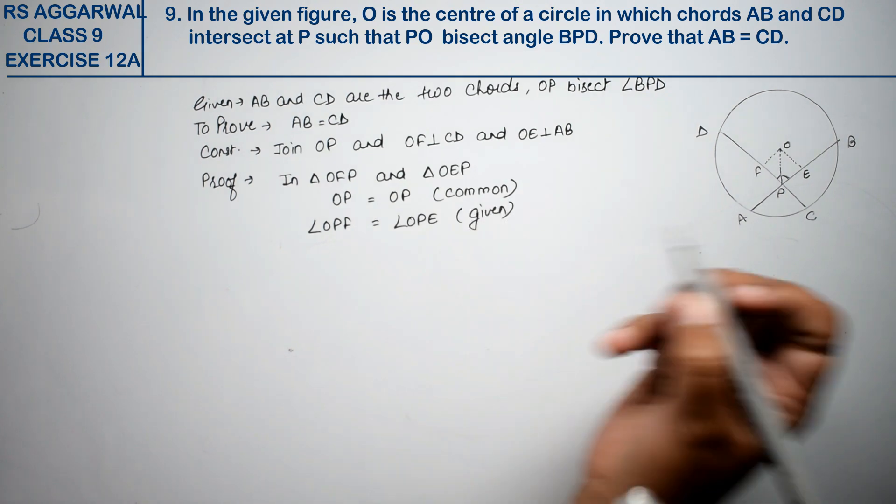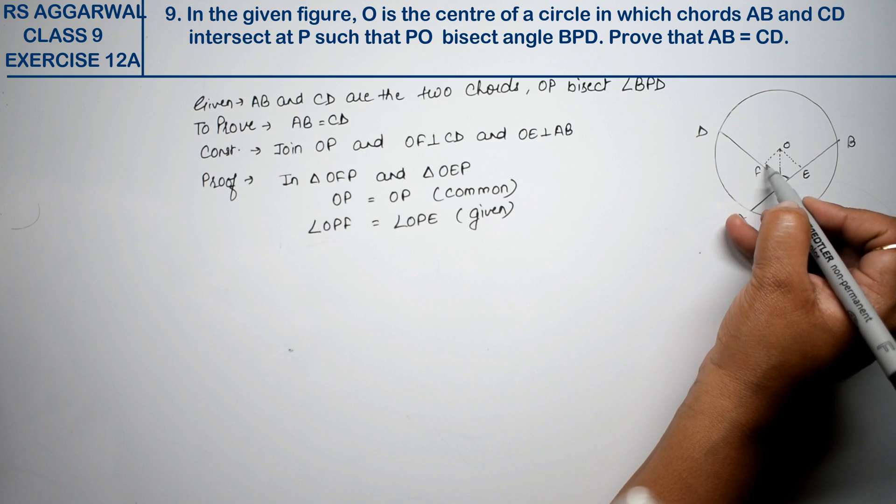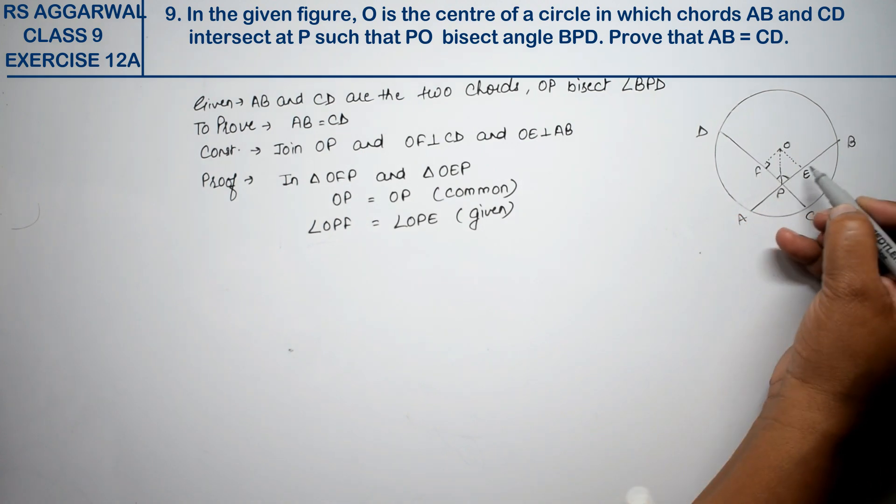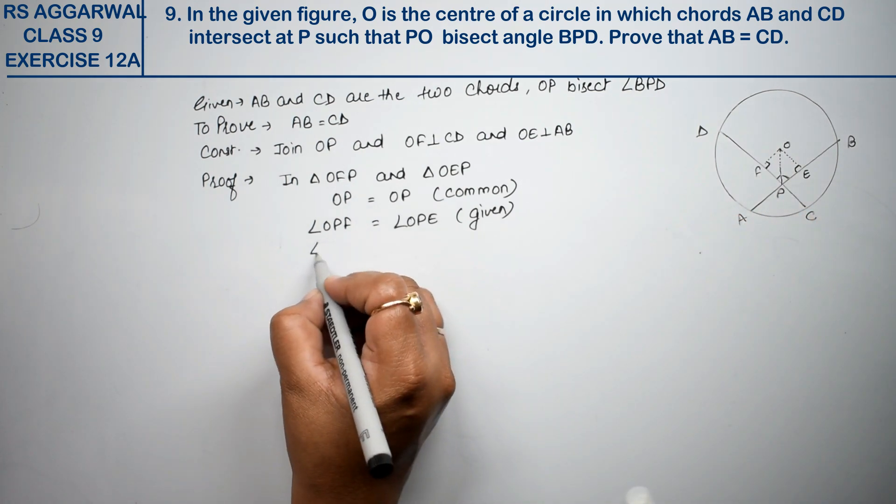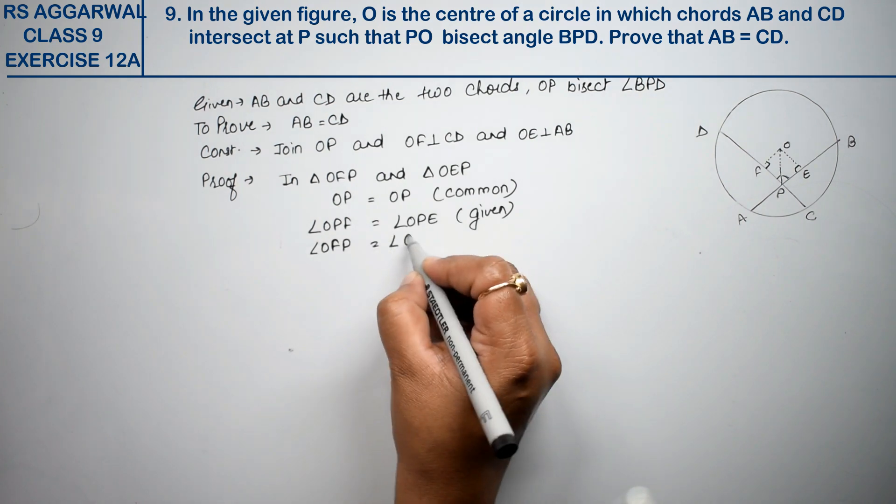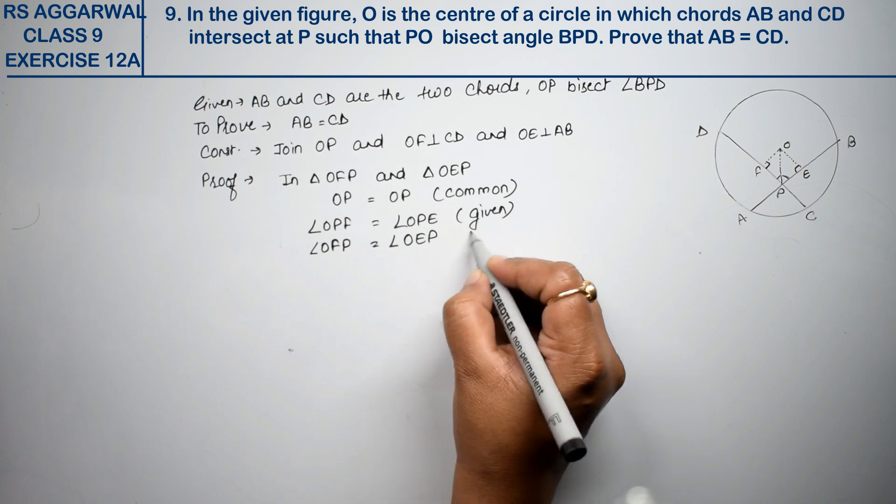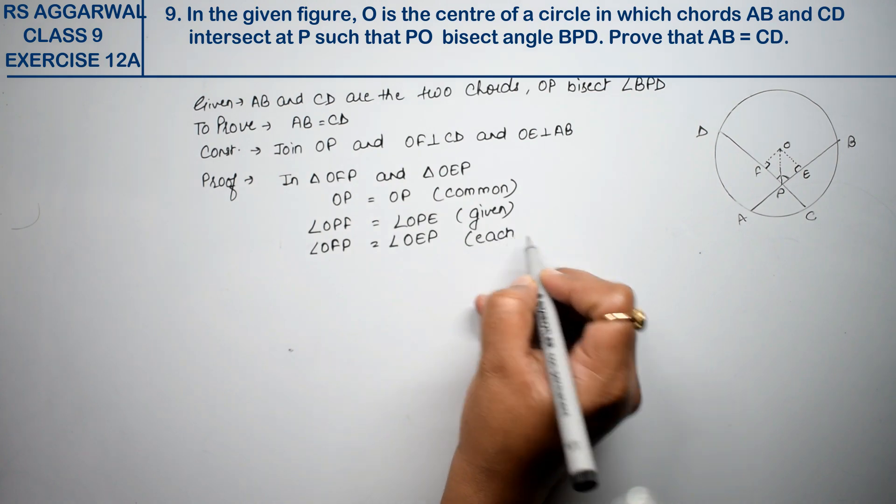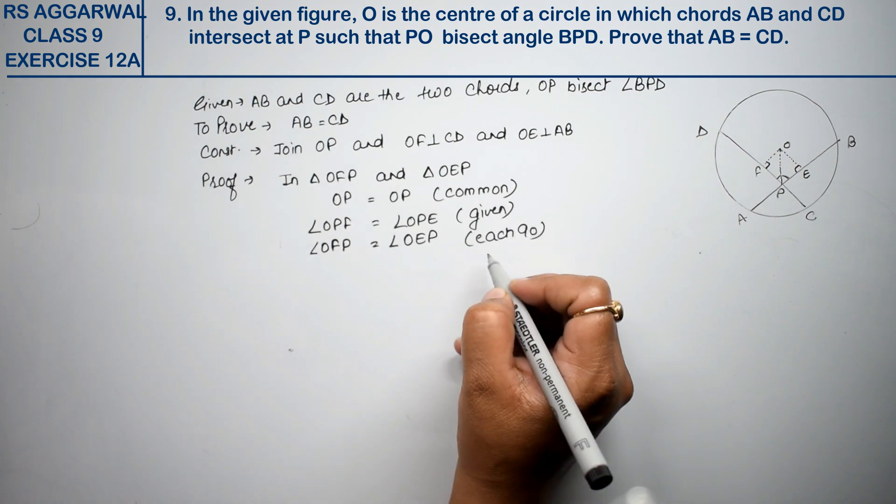Now the third thing. When we construct a 90 degree angle, what can we say? Angle OFP is equal to angle OEP, each 90 degrees. Right, friends.